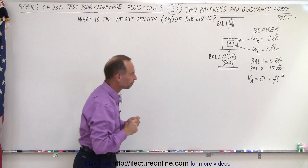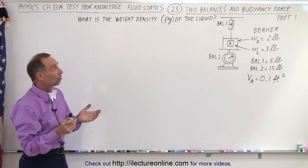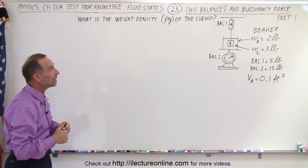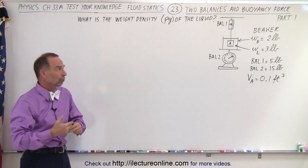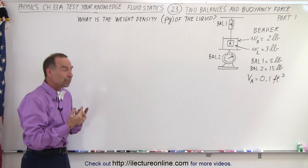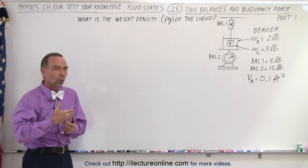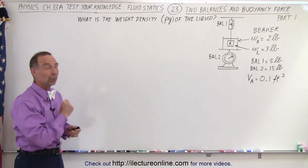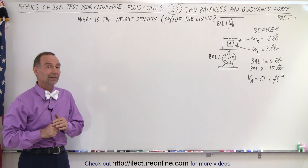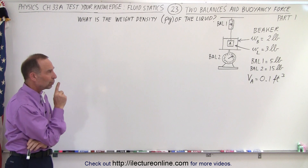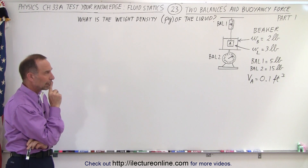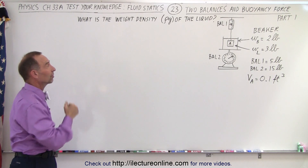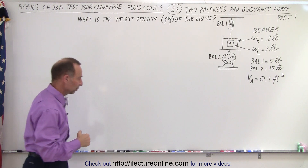The question is: what is the weight density of the liquid? In imperial units, we're looking for weight density in pounds per cubic foot. We have two possible equations — the balance at the top and the balance at the bottom.